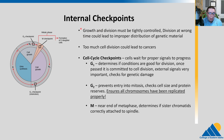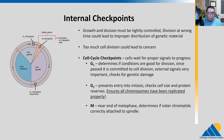The G1 checkpoint: we stop right at the end of G1 to determine if conditions are good for division. Once you've done all this growth, you need to stop and make sure everything's looking good. Once passed, the cell is pretty much committed to cell division — once we pass this G1 checkpoint, there's really no stopping it. The external signals here are very important, and the cell is going to check for genetic damage. We're about to duplicate the genome, so if the cell finds any damage, it will stop itself from dividing. It doesn't want to pass on any mutations.